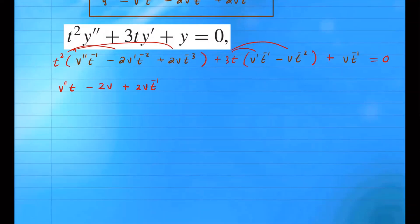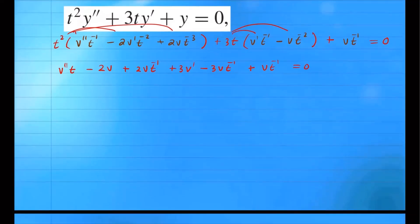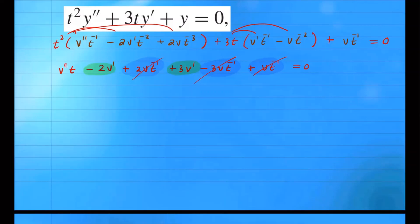For the second part, distributing positive 3t: we get positive 3v prime, since t and t to the negative 1 cancel. Then minus 3v t to the negative 1. And the last term is plus v t to the negative 1, equals zero. Now combining like terms — the negative 2v prime, plus 3v prime combine; and the terms with v t to the negative 1 cancel each other. We're left with v double prime t plus v prime equals zero.